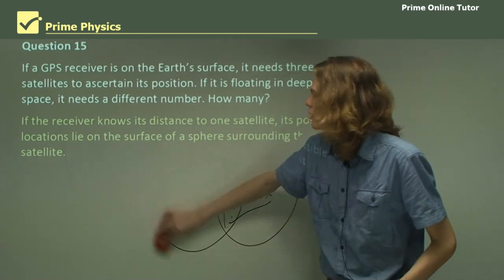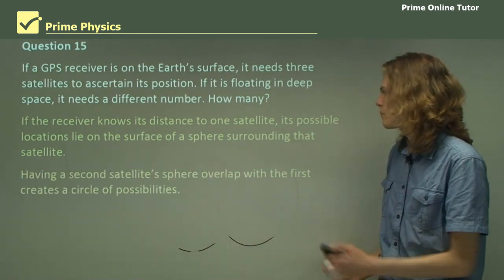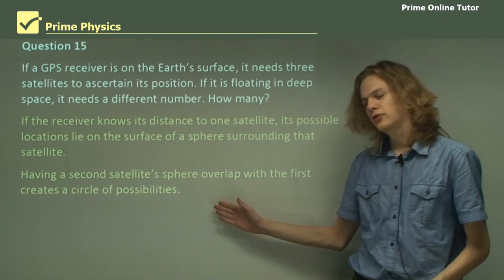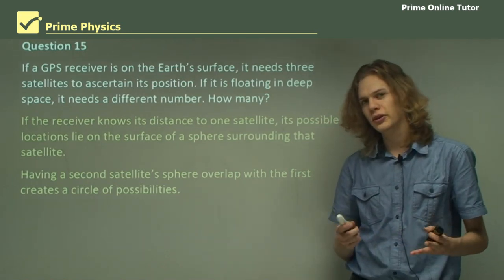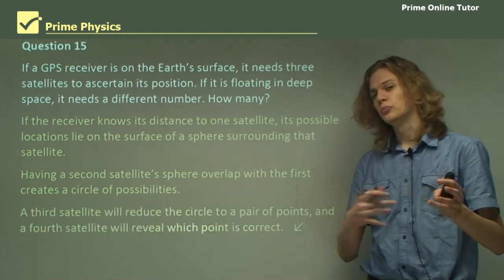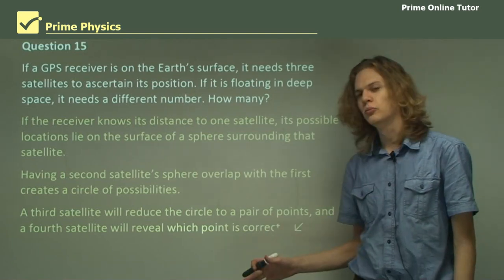So what we need is just one more. One more sphere than in the two-dimensional case, on the surface. So the second sphere will overlap with the first sphere and create a circle of possibilities. A third sphere will create two possible points. And a fourth sphere will determine which of those two possible points is correct. So that's the end of the questions.